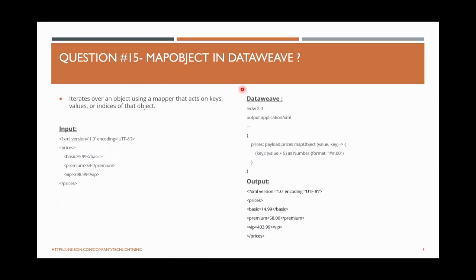There will also be DataWeave-related questions. When working on MuleSoft, we don't only work on connectors or API design — we also write DataWeave code. What is map object in DataWeave? Map is for handling arrays, while map object is for objects. Map object iterates over an object using a mapper that acts on keys, values, and indices of that object.